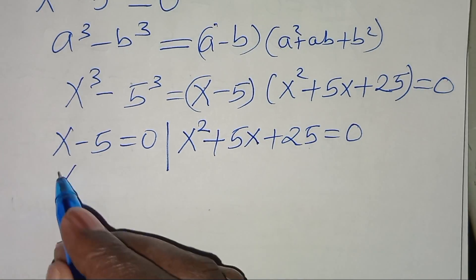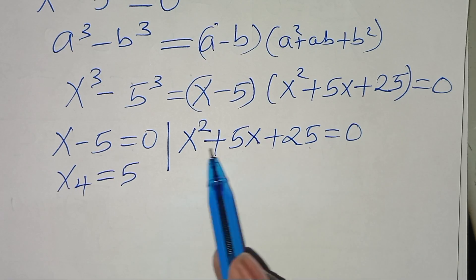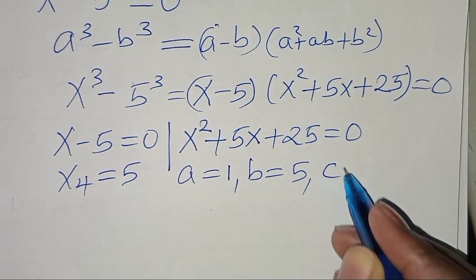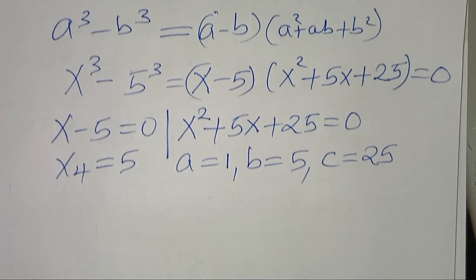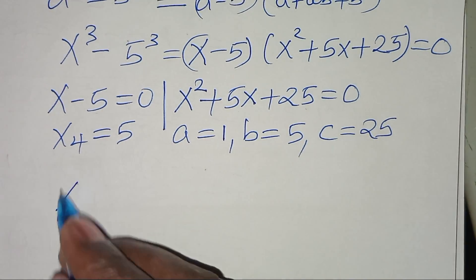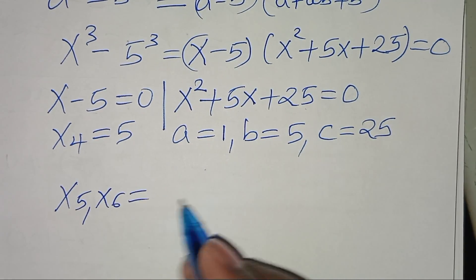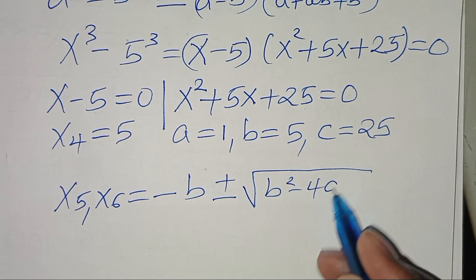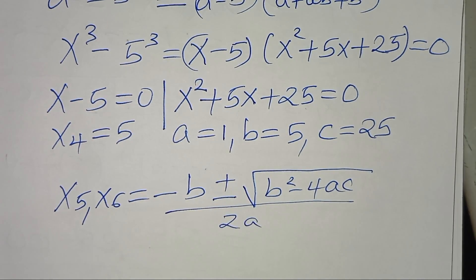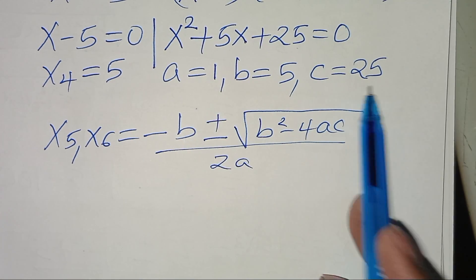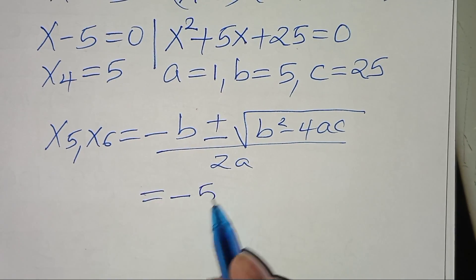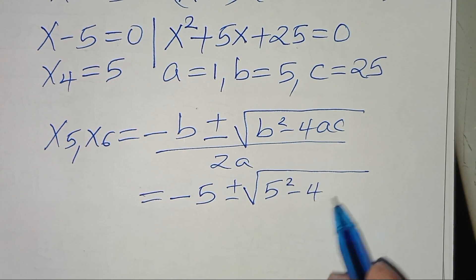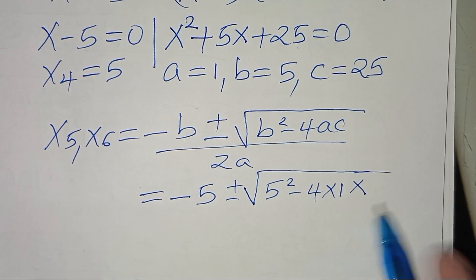From the first part, x₄ equals 5. For the quadratic part, we have a equals 1, b equals 5, and c equals 25. Applying the quadratic formula for x₅ and x₆: negative 5 plus or minus the square root of 5 squared minus 4 times 1 times 25, all divided by 2.